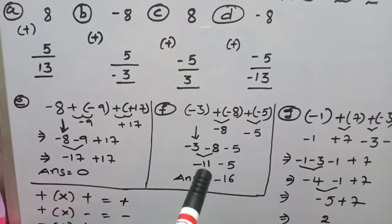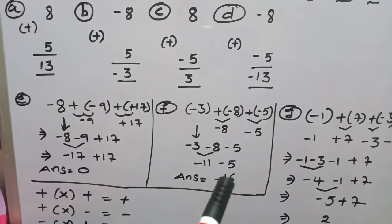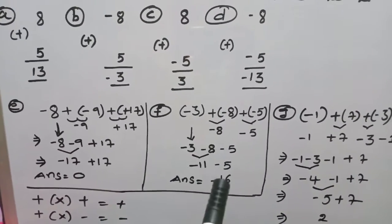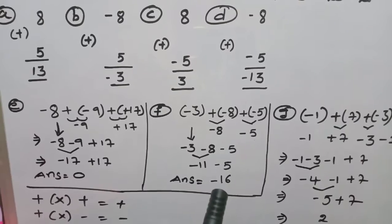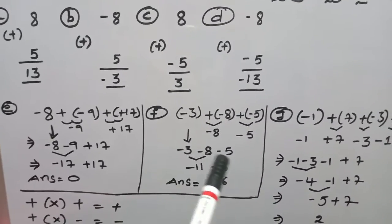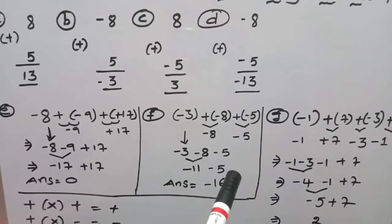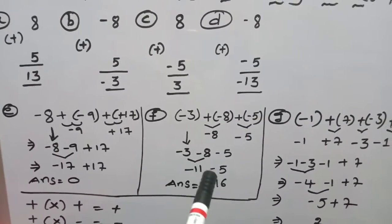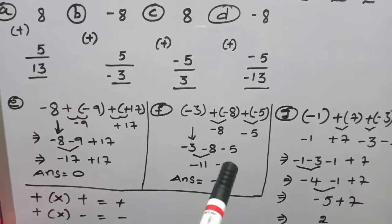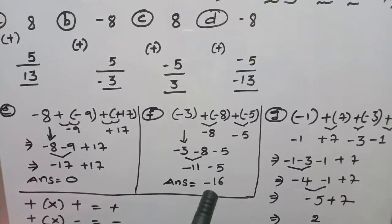Here 11 and 5 are both negative, so 11 plus 5 is 16, and both are negative, so give symbol as negative — giving minus 16. Or you can add all 3 numbers at once: 3 plus 8 plus 5 means 16. All are negative, so give symbol as negative — the answer is minus 16.